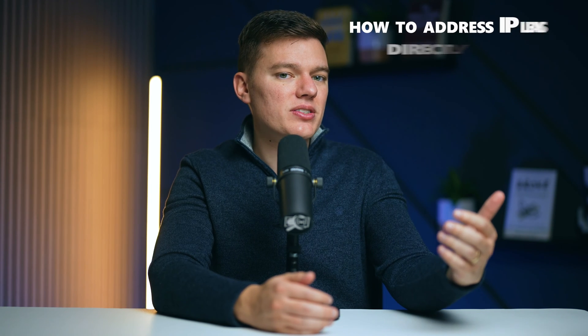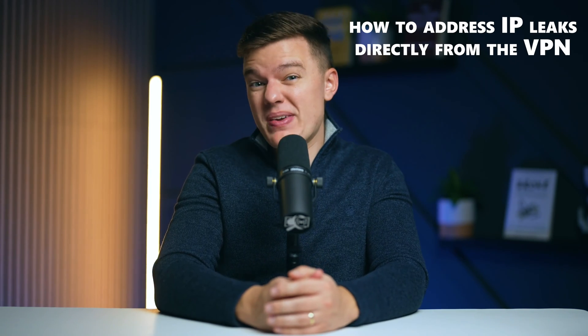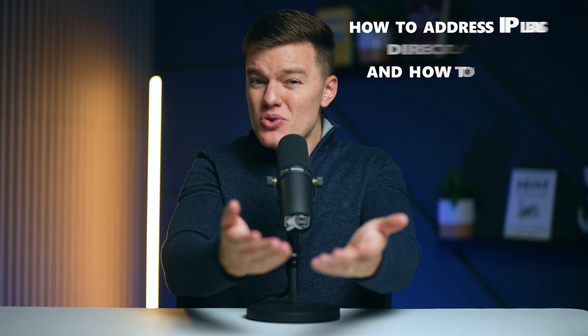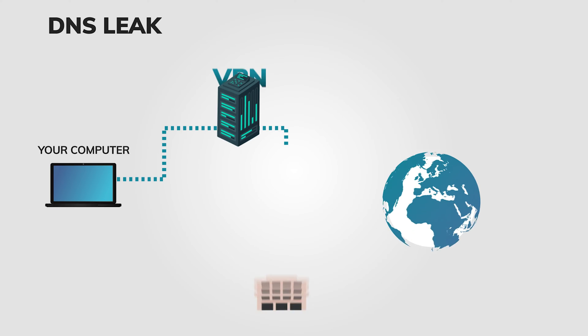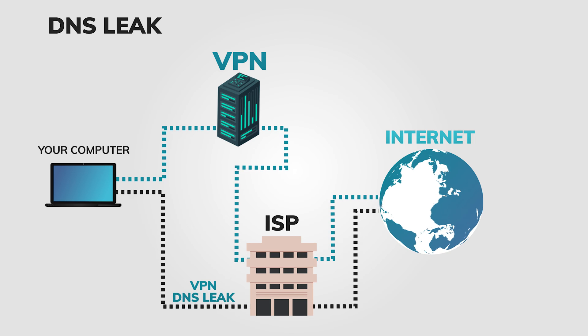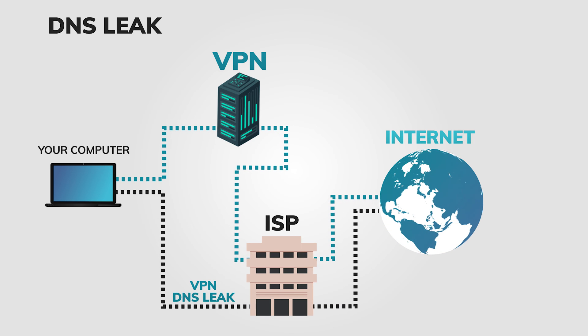How do you address IP leaks originating directly from your VPN? When you connect to a VPN, your expectation is that all of your internet traffic is routed through a secure tunnel, including your DNS requests. DNS requests are critical because they translate human-readable domain names into machine-readable IP addresses, and if these requests leak, they can reveal the websites you visit to third parties, including your internet service provider.